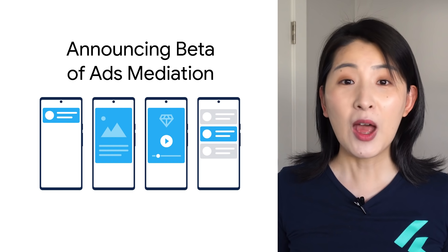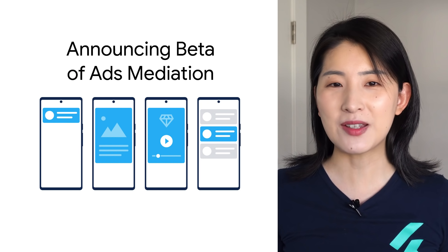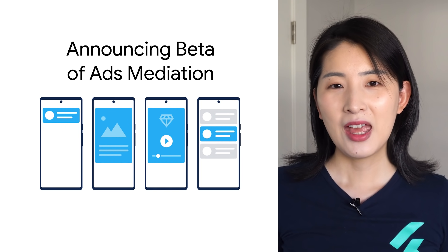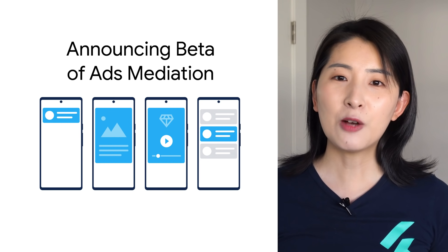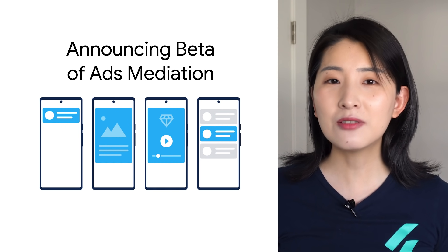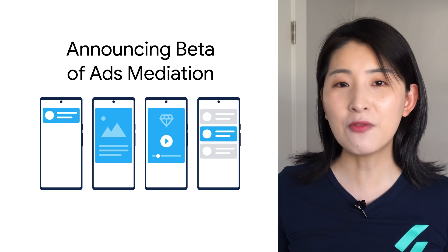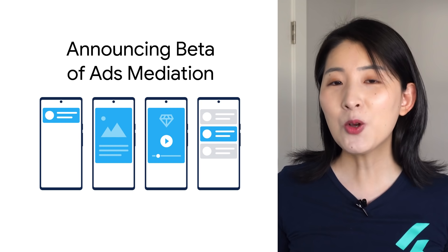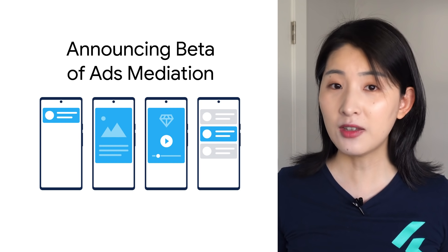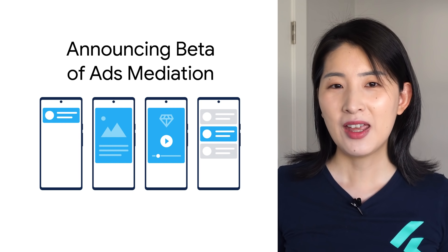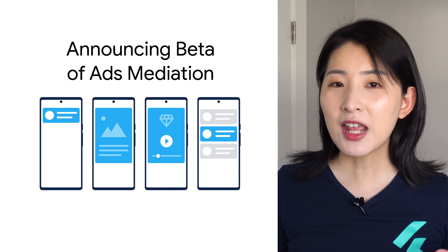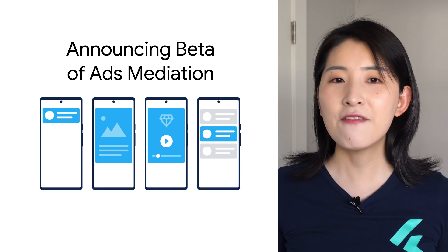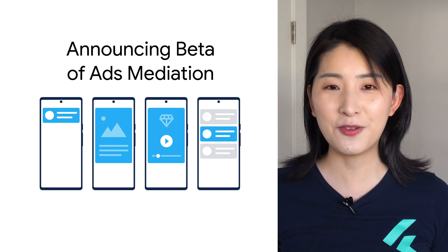In addition, to help you optimize your ad performance, we're including a beta version of Ads Mediation. Mediation is a feature that helps you manage all of the ad sources you use to serve ads to your apps in one place. These include non-Google ad networks such as Fan, AppLovin, etc. Using Mediation, you can send incoming ad requests to multiple ad sources and find the best available ones to fill the requests.